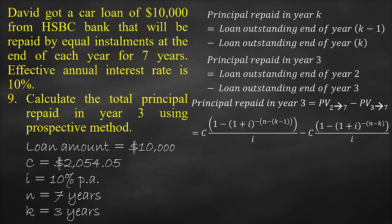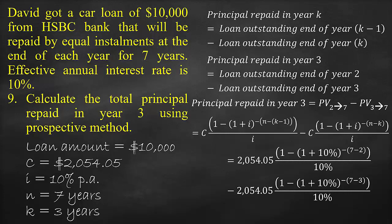The formula for the loan outstanding at the end of Year 2 is: $2,054.05 multiplied by (1 minus (1 plus 10%) to the power of negative (7 minus 3 minus 1), which equals negative 2 years), all divided by 10%. This gives the present value of the remaining instalments as of Year 2, representing 5 unpaid periods.